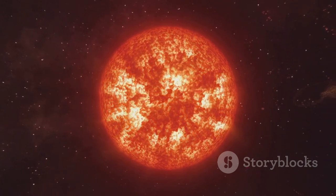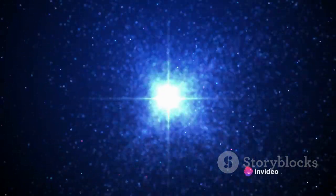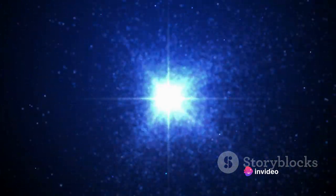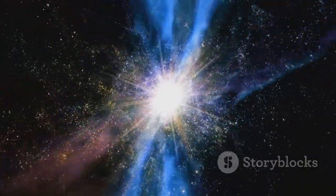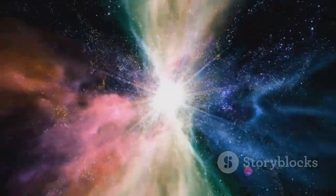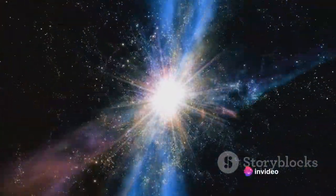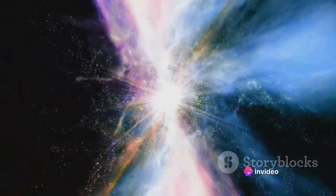However, this stability doesn't last forever. Over time, the star exhausts its hydrogen fuel. When this happens, fusion slows down and gravity begins to take over, causing the star's core to contract. Meanwhile, the outer layers expand and the star morphs into a red giant. If you were to look at our sun five billion years from now, you'd see a red giant where our familiar yellow dwarf once was.